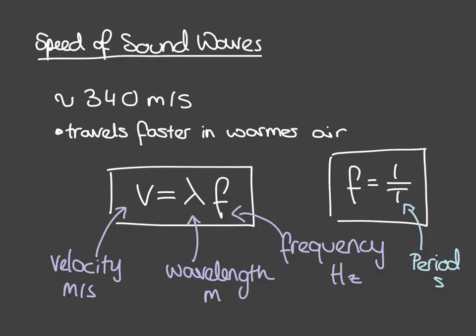Our next job is to look at the speed of sound waves. As a general value, the speed of sound is 340 metres per second. You don't have to memorise that number, but it is useful to recognise it so you can check whether a speed looks the right magnitude in calculations. The speed of sound changes in air depending on temperature, air pressure, and other factors, so it's not a fixed value, but it is roughly of the order of 340 metres per second.